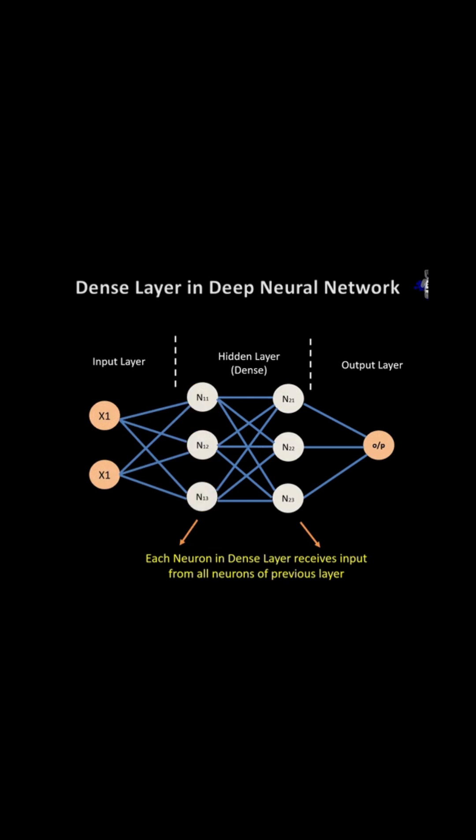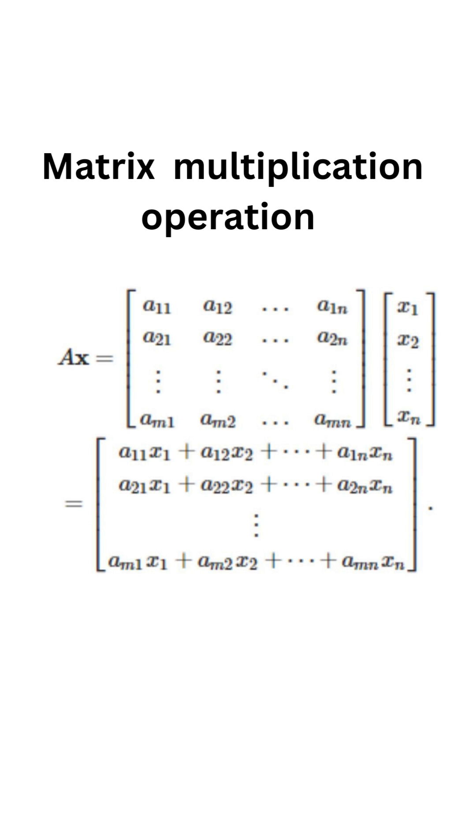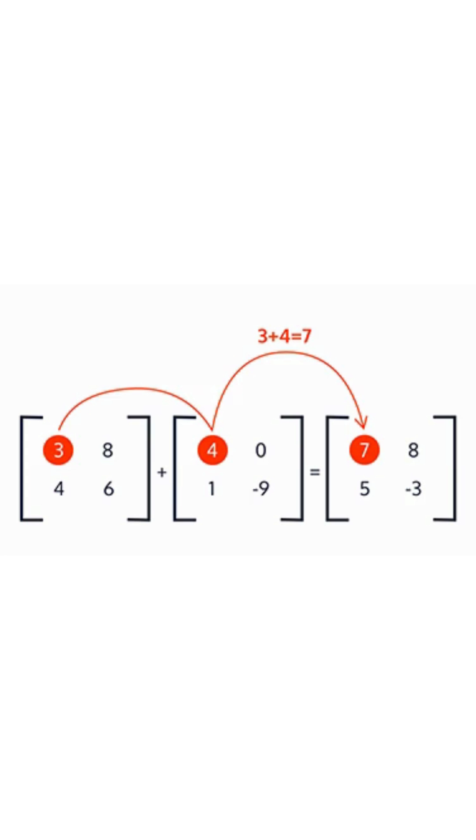In the background, the dense layer performs a matrix vector multiplication. The general formula of matrix vector multiplication can be represented as A is a m×n matrix whereas X is a 1×n matrix.